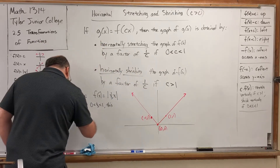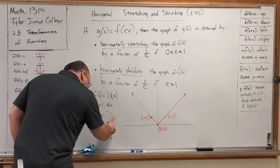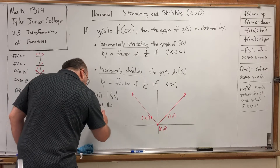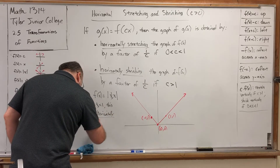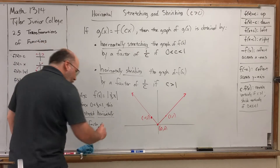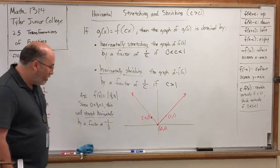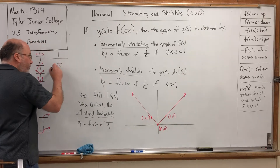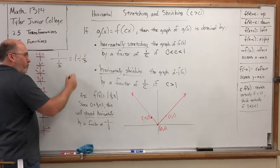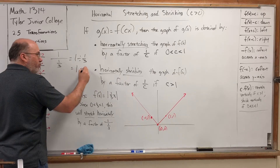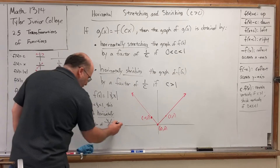This will stretch by a factor of not one-third, but the reciprocal of one-third. Writing 1 over one-third is unnecessary if you know what it means to reciprocate a fraction — you turn it upside down. But 1 over one-third, viewed as a division problem, is 1 divided by one-third: keep the first number, change to multiplication, flip the second. 1 times 3 over 1 is 3. So instead of saying 1 over one-third, we'll just say by a factor of 3.